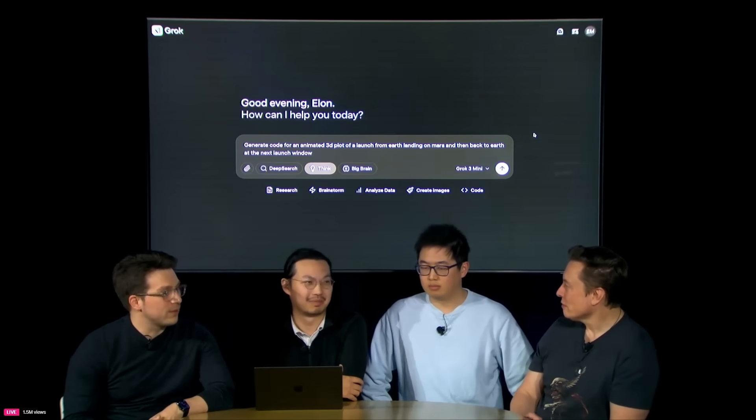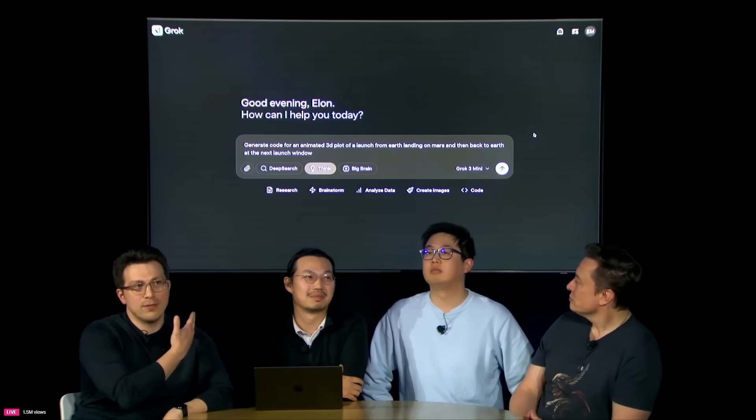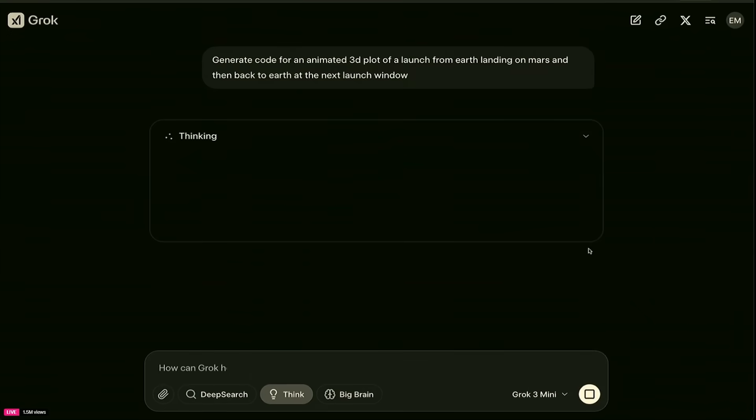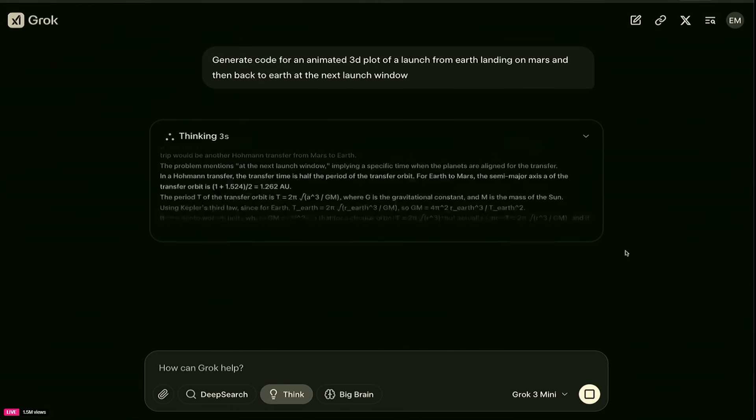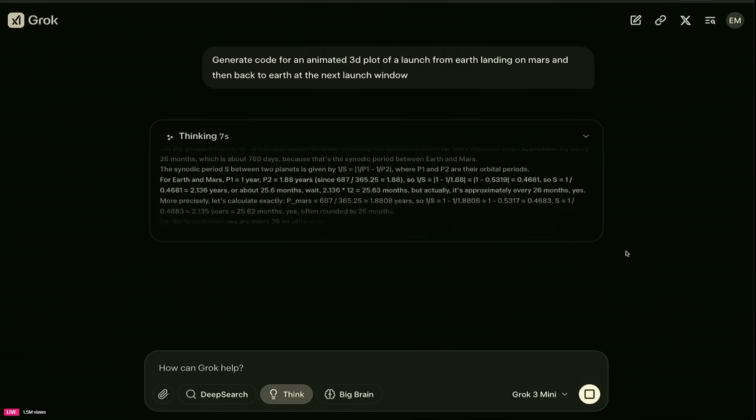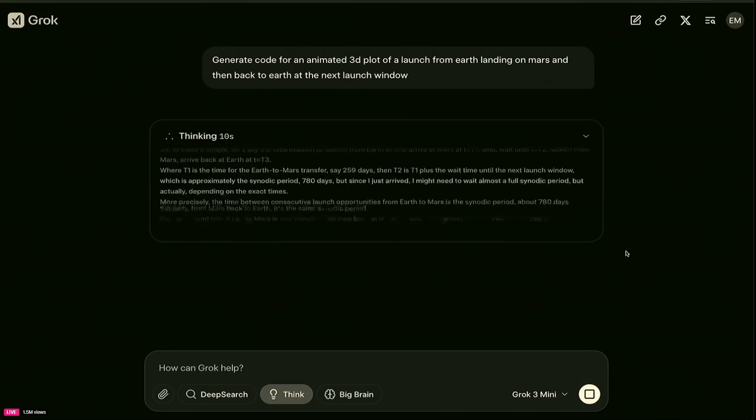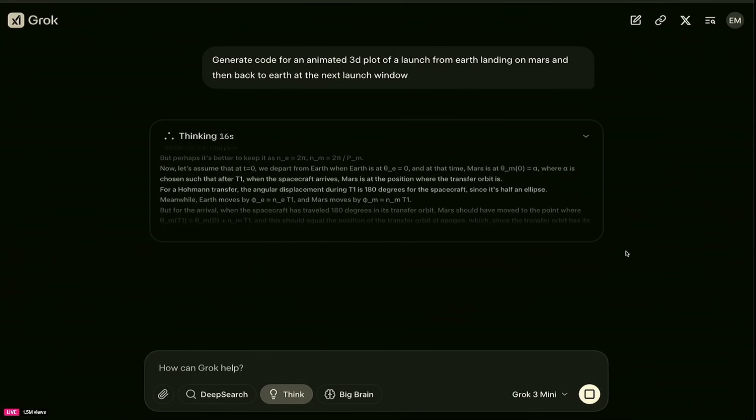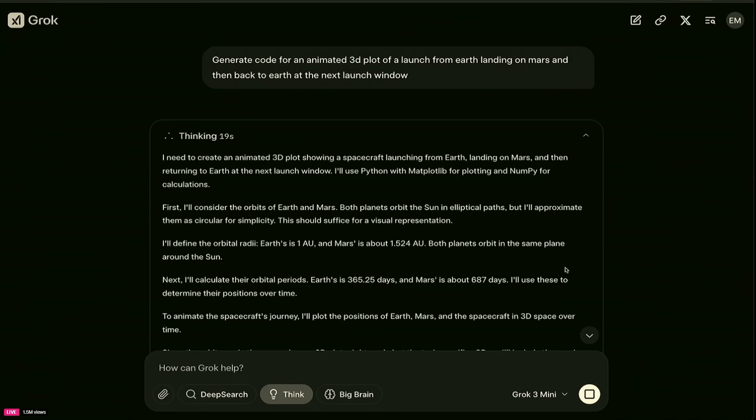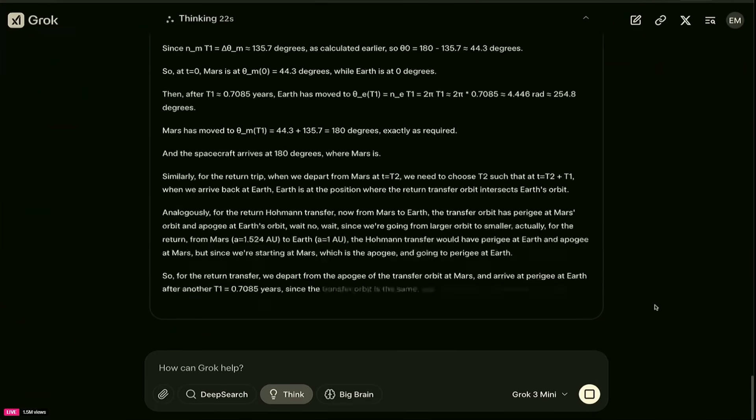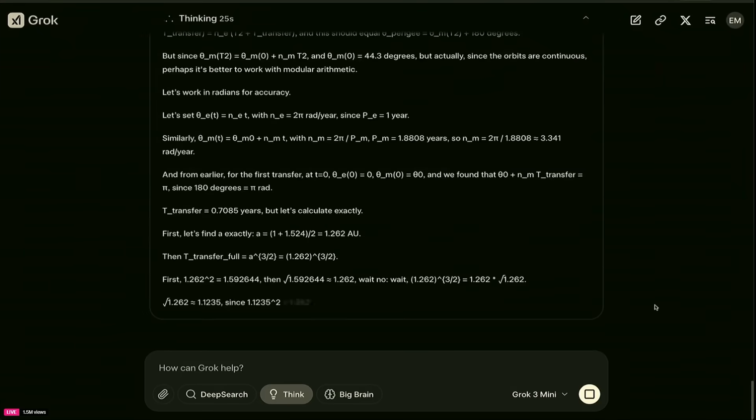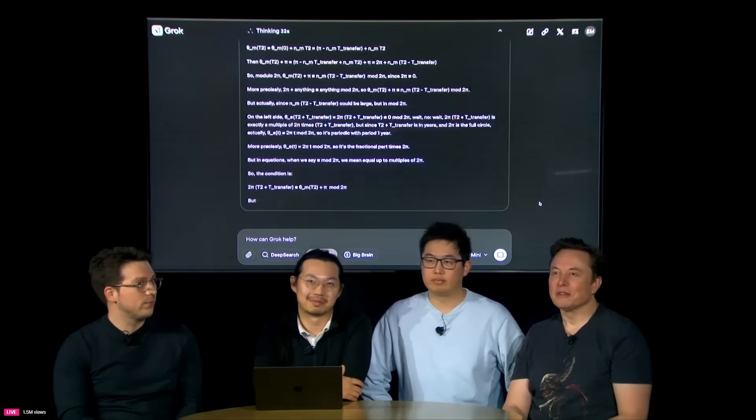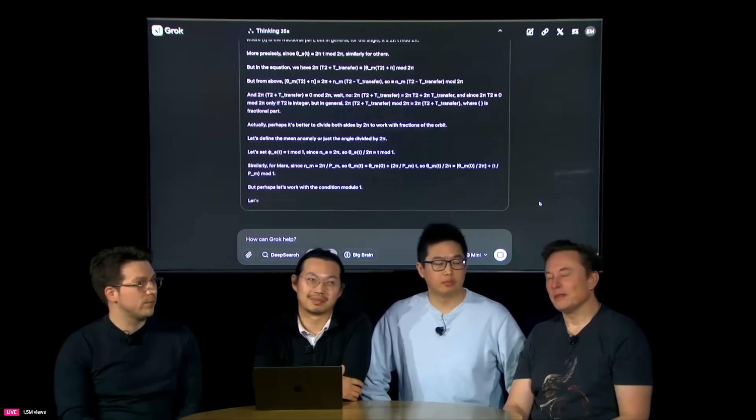Yeah, exactly. This is the Grok interface. And we've typed in this text that you can see here: generate code for an animated 3D plot of a launch from Earth landing on Mars and then back to Earth at the next launch window. And we've now kicked off the query and you can see Grok is thinking. So, part of Grok's advanced reasoning capabilities are these thinking traces that you can see here. You can even go inside and actually read what Grok is thinking as it's going through the problem, as it's trying to solve it. We are doing some obscuration of the thinking so that our model doesn't get totally copied instantly. So, there's more to the thinking than is displayed.